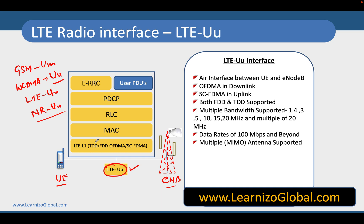This interface has Layer 1, which is the physical layer of the radio network architecture. It uses TDD (Time Division Duplexing) or FDD (Frequency Division Duplexing) mechanisms. We also have multiple access techniques: OFDMA for the downlink and SC-FDMA for the uplink.